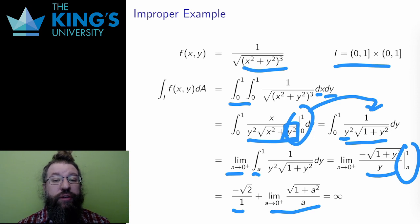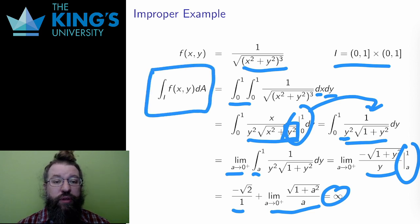And I conclude that the improper integral diverges, and the graph of this function covers an infinite amount of volume as it gets larger and larger up to the asymptote at (0,0).